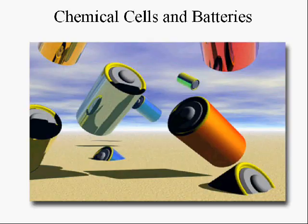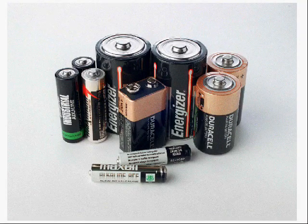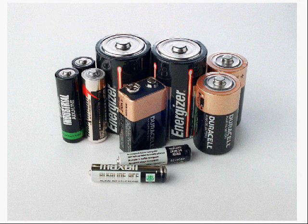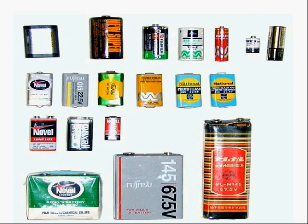Chemical cells and batteries produce direct current, DC. We have some types of batteries that are not rechargeable. Here you see some alkaline batteries, a very common type of battery that you use in electrical devices, flashlights, radios, and other toys and things like that.